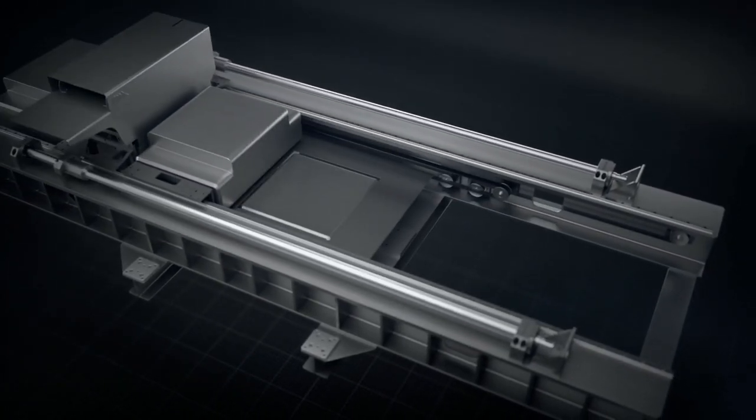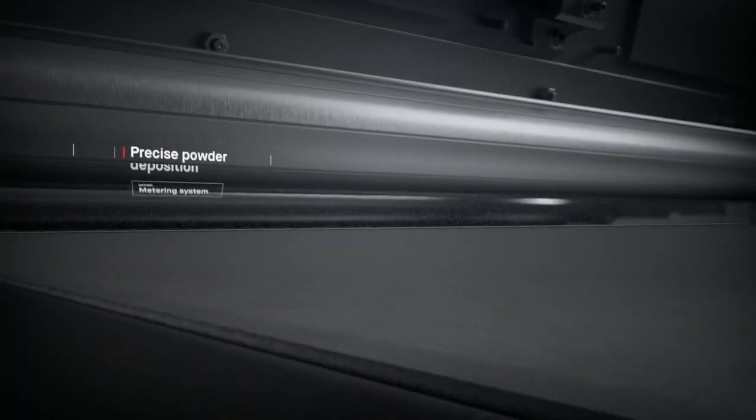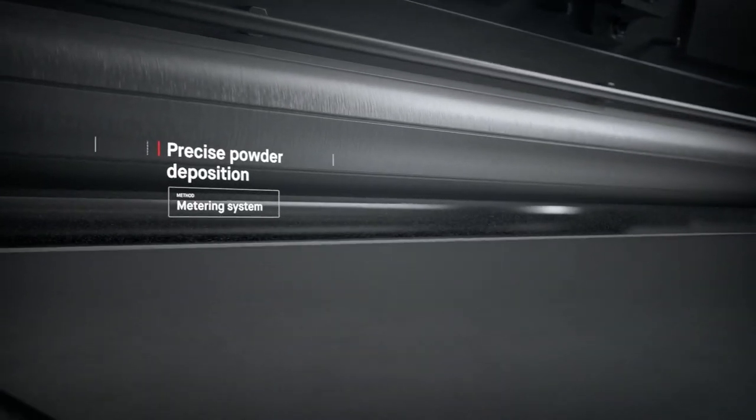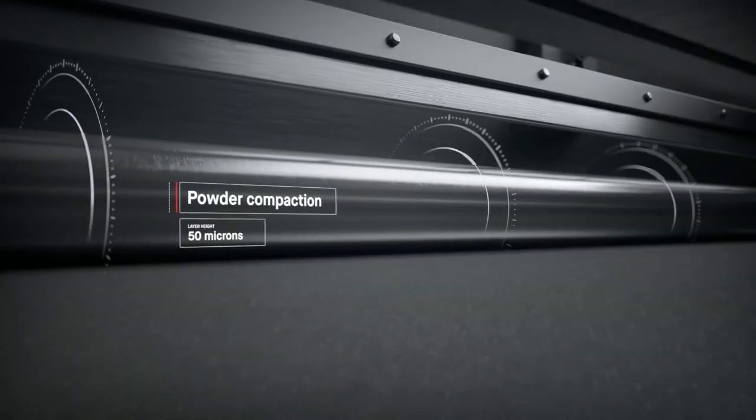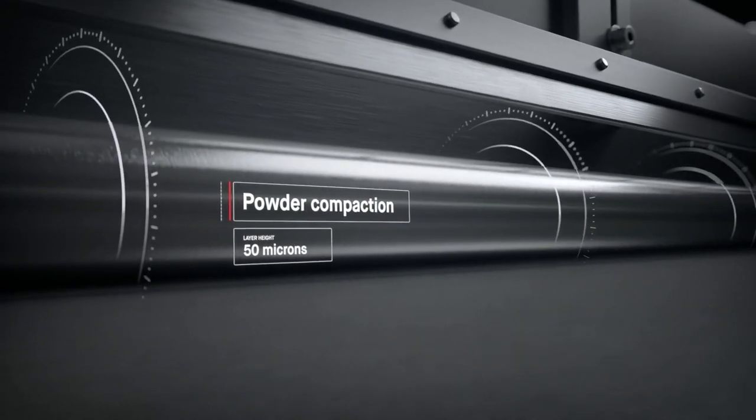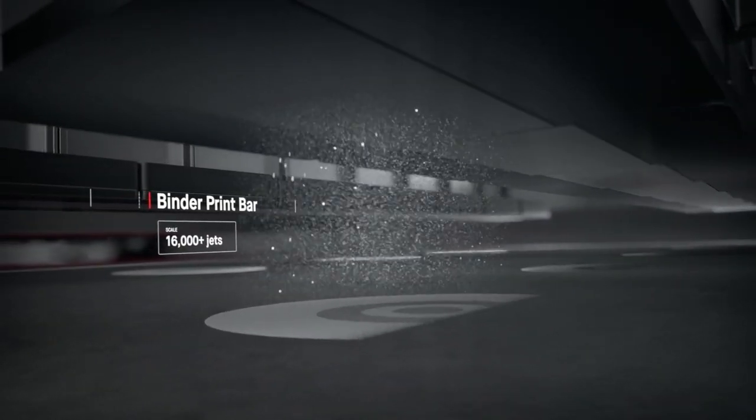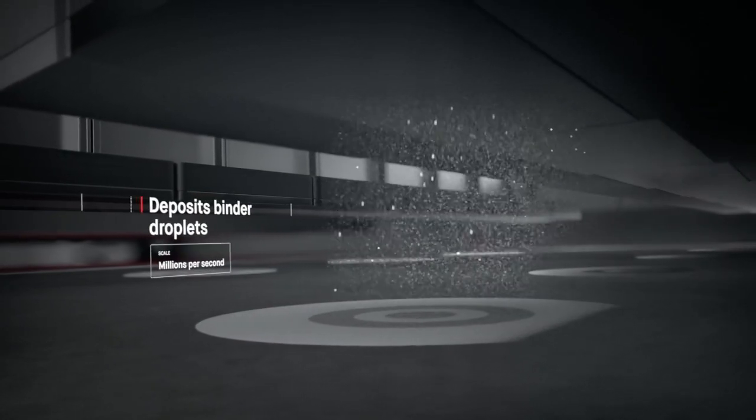A single-pass starts in the powder spreader, where a metering system deposits metal powder and a compacting system forms a layer as thin as a human hair. The print bar follows, jetting droplets of a binding agent. Millions are jetted per second, binding metal powder to form high-resolution layers.